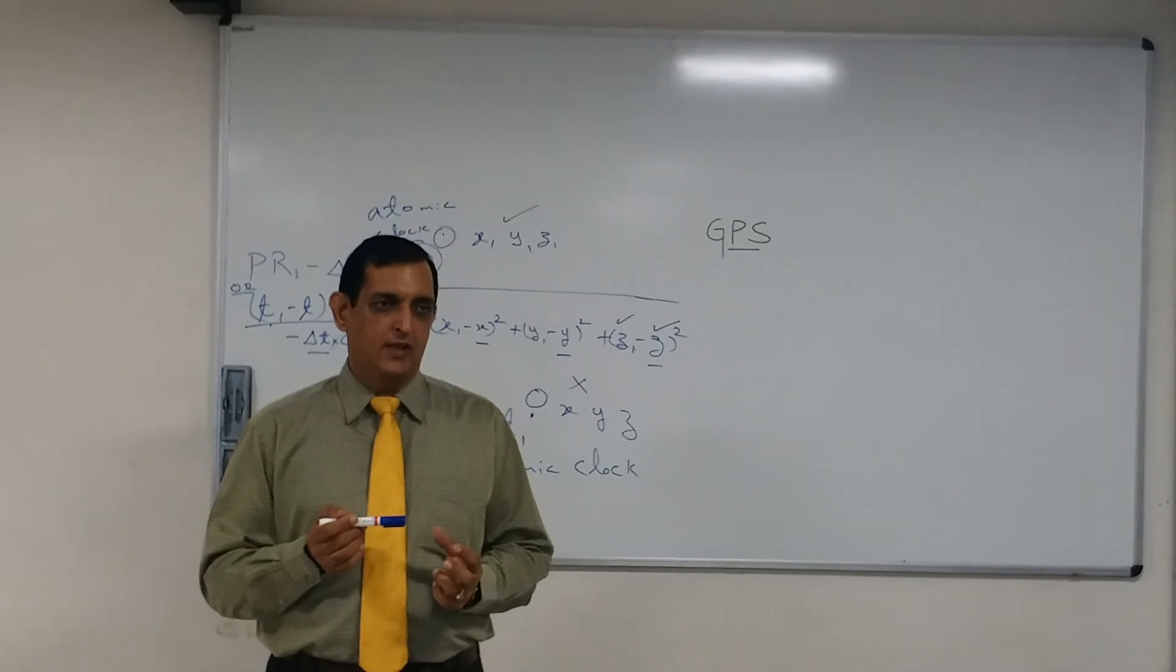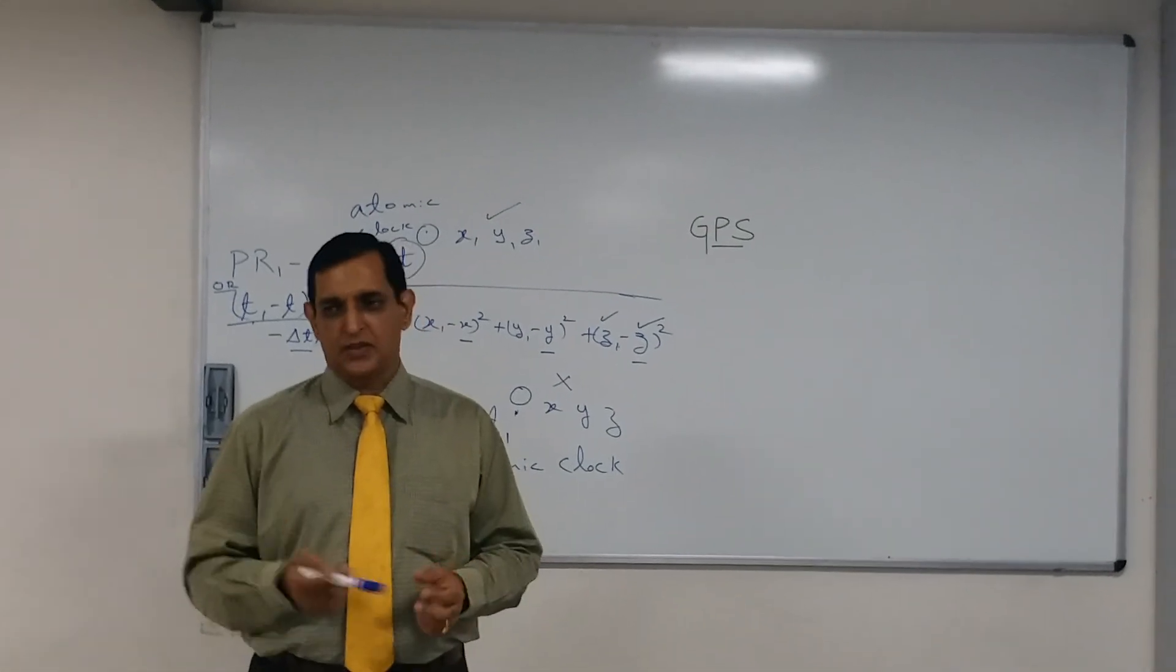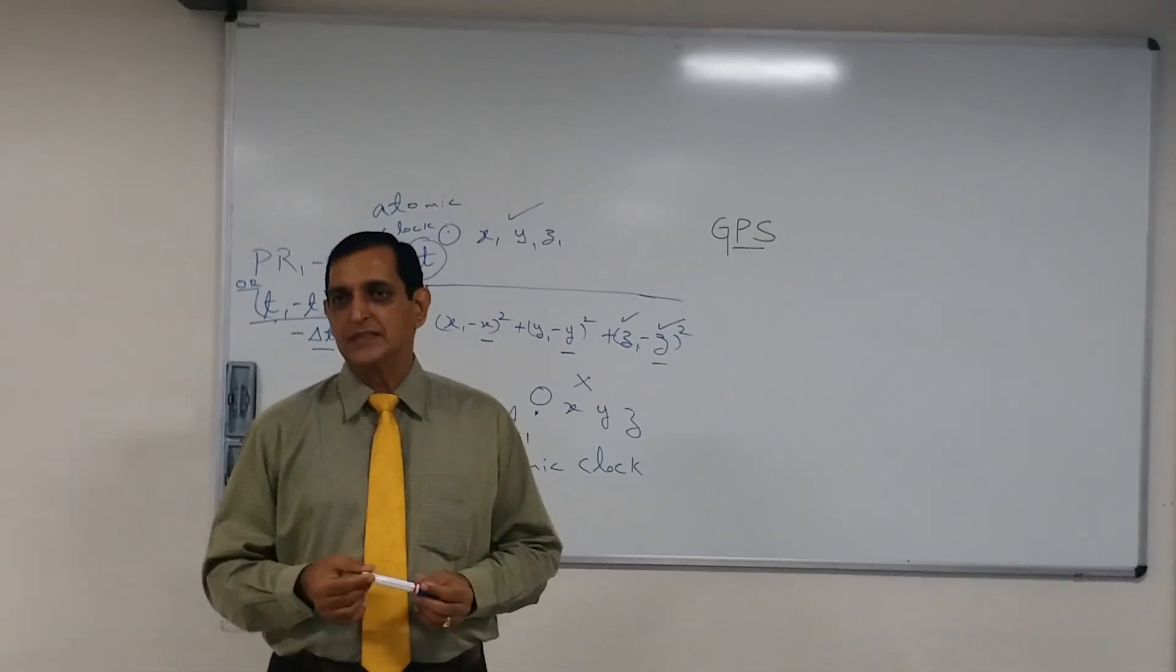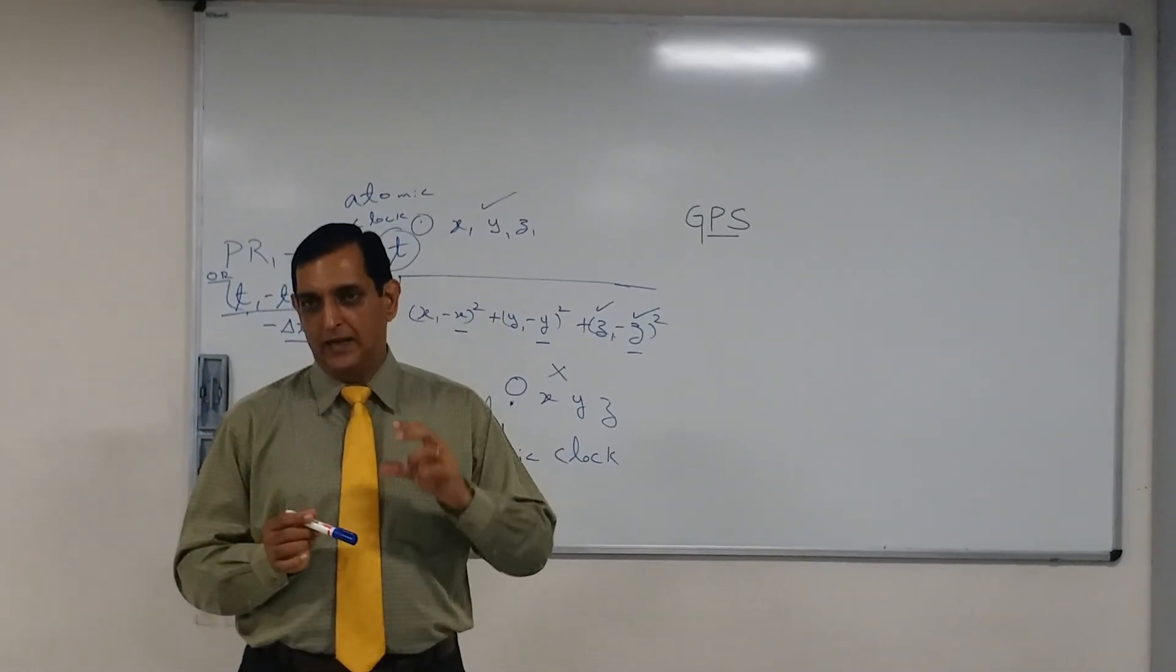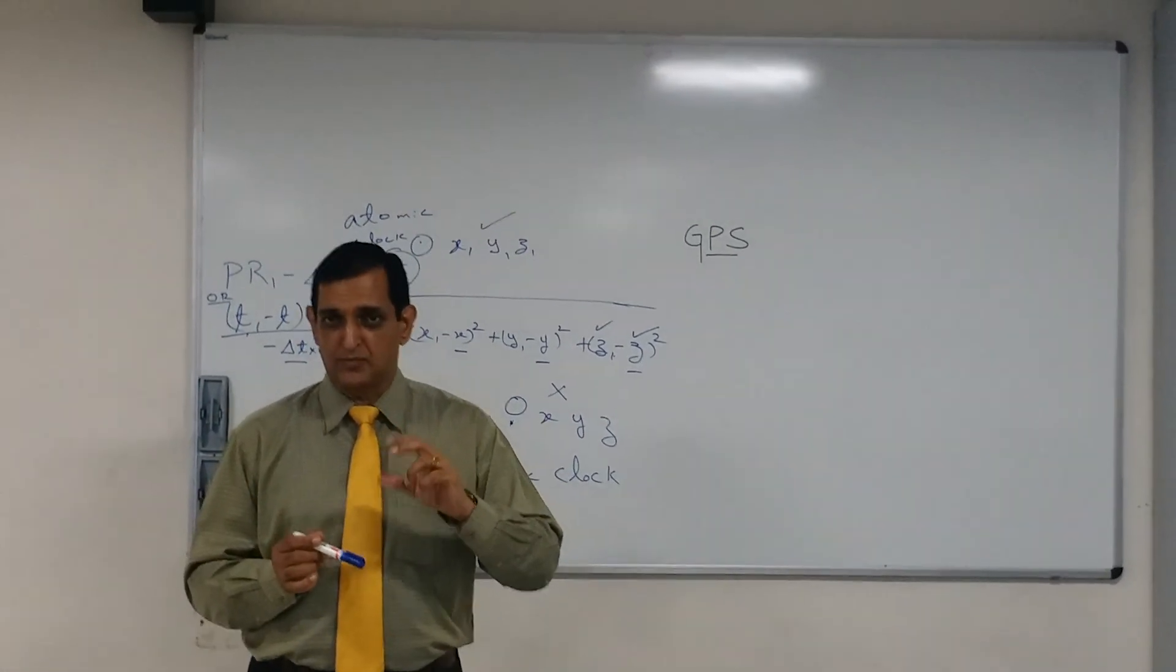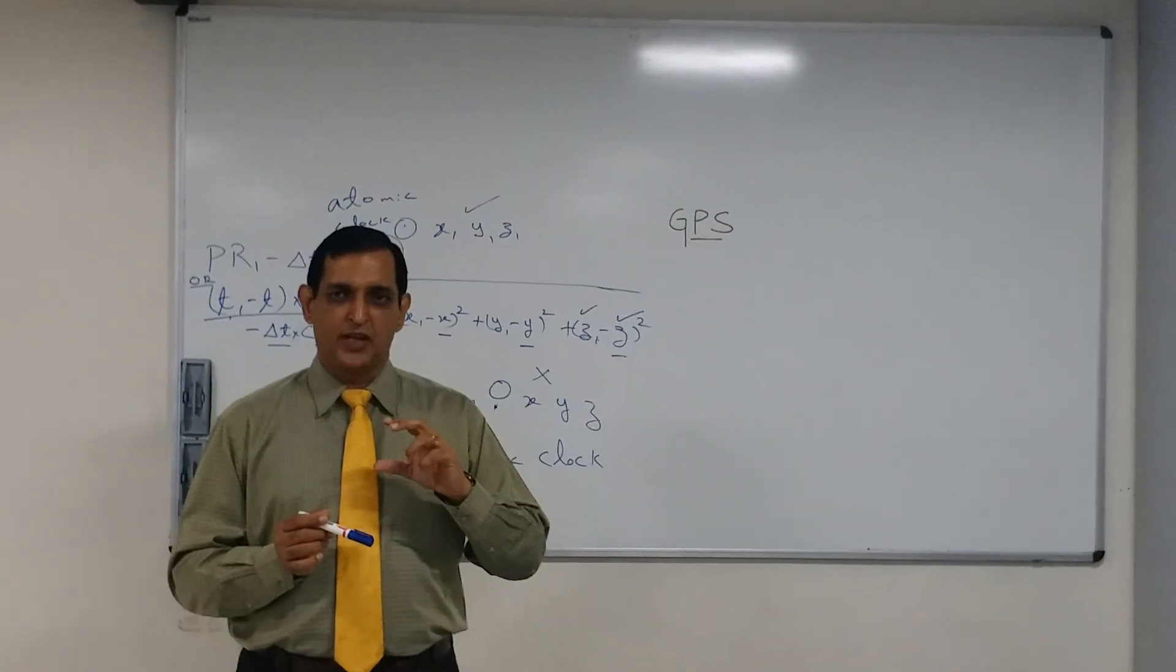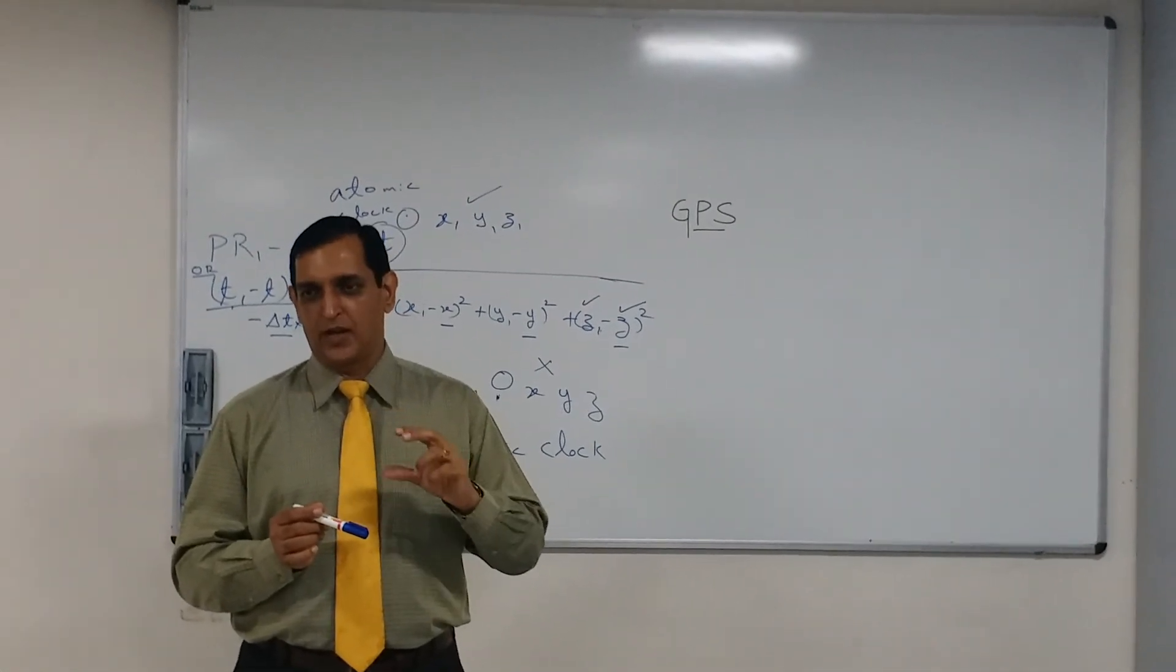Though very marginally, but it is good enough to give us an error in the fixes. So that is why it is ionospheric and tropospheric delay. A little delay is caused, speed is slightly reduced. As I said very marginally, the error is not very high.